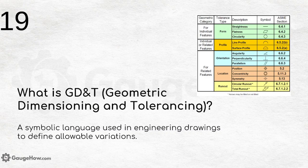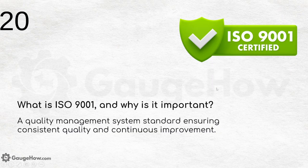What is GD&T — geometric dimensioning and tolerancing? It is a symbolic language used in engineering drawings to define allowable variations. The symbols are divided into five tolerance types: form, profile, orientation, location, and runout.